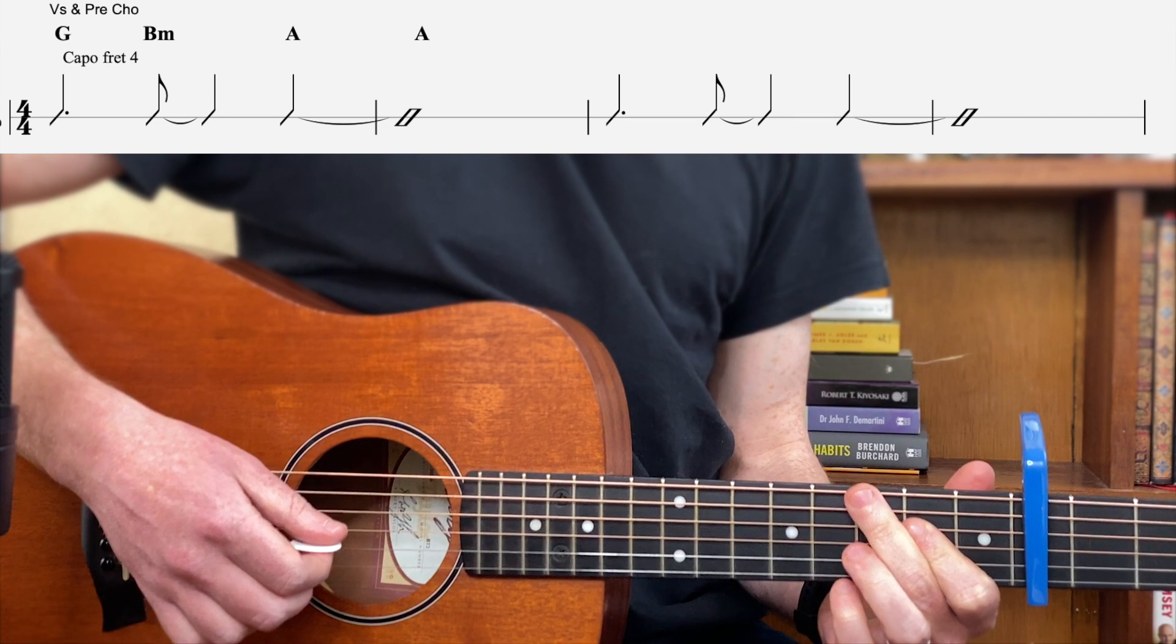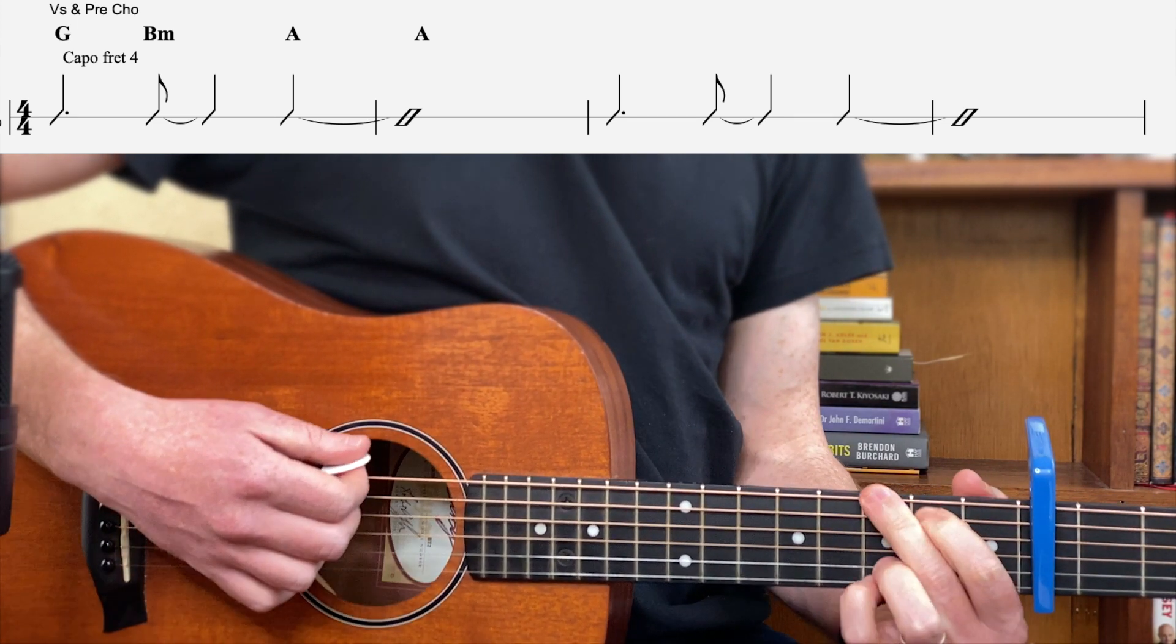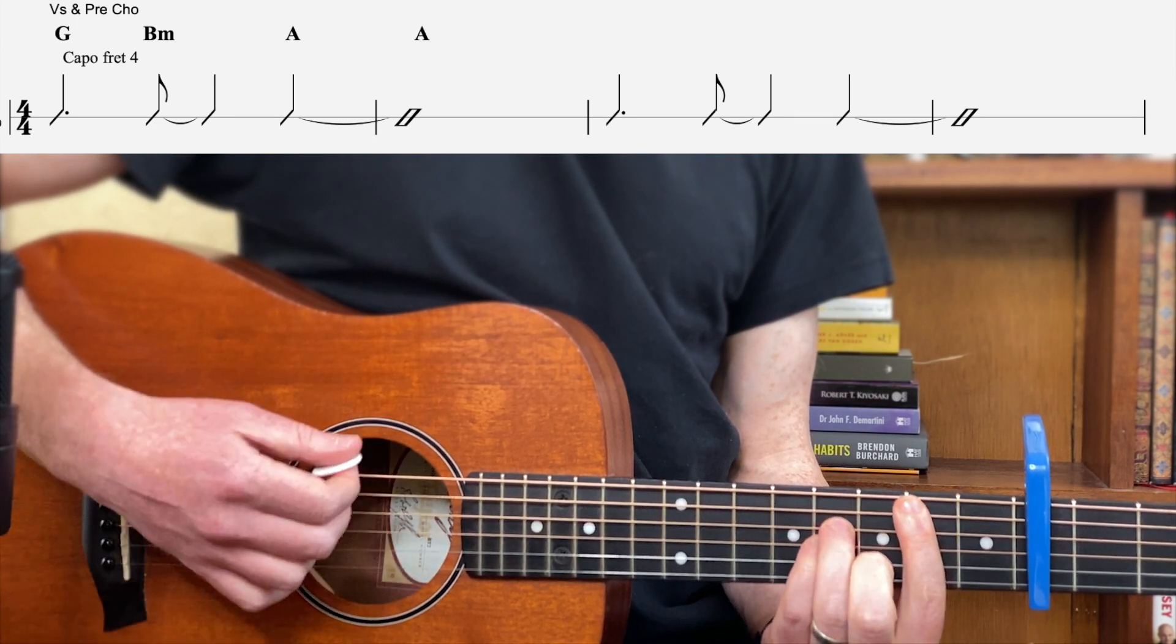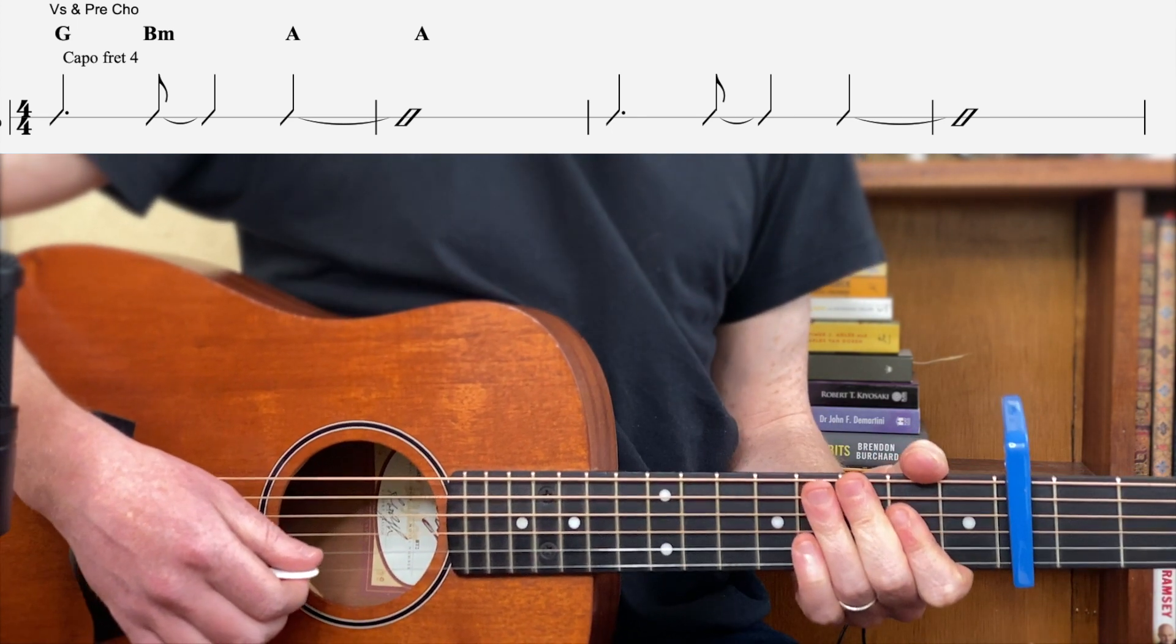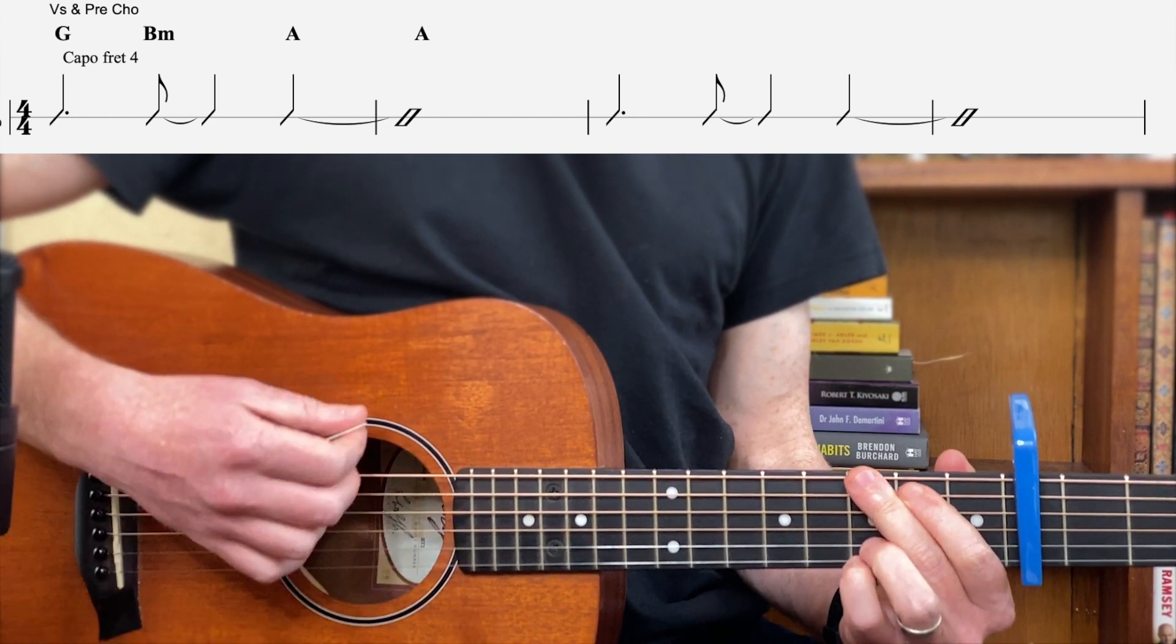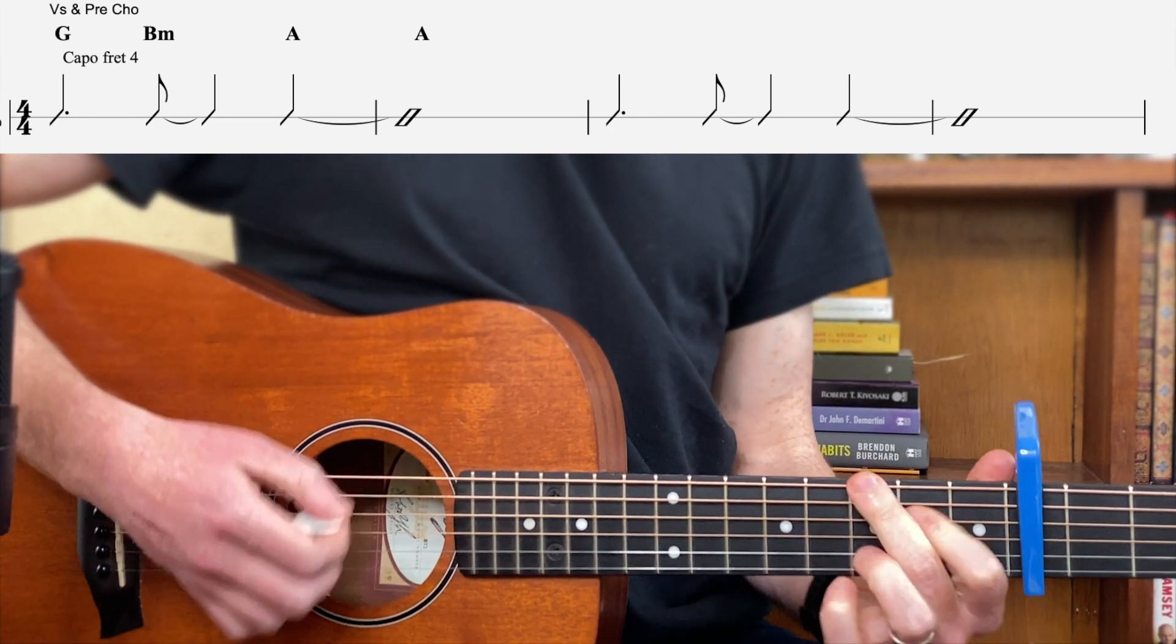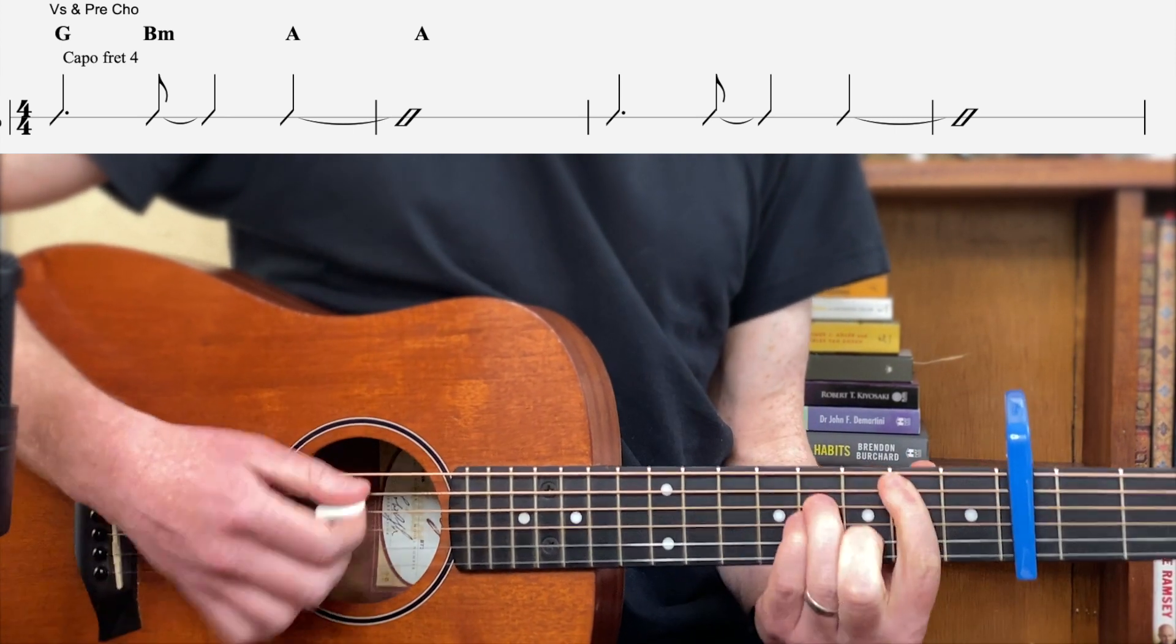You do that again: one and two and three and four, one two three four. Just make sure you get the count. So it goes one and two and three and four. The G, one and two, and that B minor happens on the end after two. One and two and three and four, and the A happens on four.